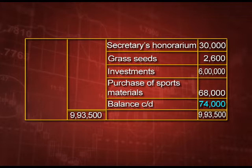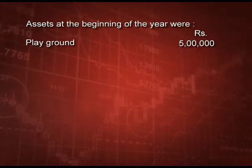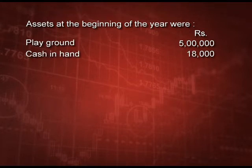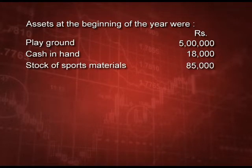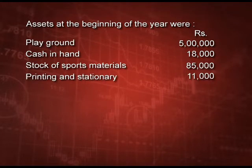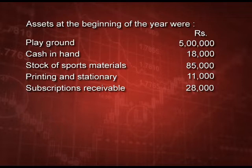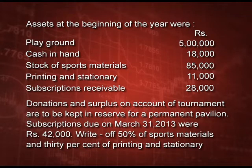Now you can see the additional information. Assets at the beginning of the year were: playground rupees 50000, cash in hand rupees 18000, stock of sports material rupees 85000, printing and stationery rupees 11000, subscription receivable rupees 28000. Donation and surplus on account of tournament are to be kept in reserve for the permanent pavilion. Subscription due on 31st March 2013 was rupees 42000. Write off 50 percent of sports material and 30 percent of printing and stationery.